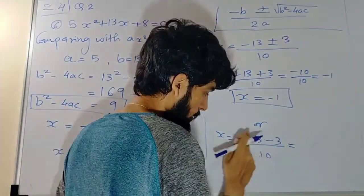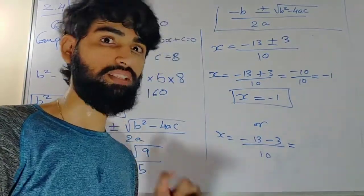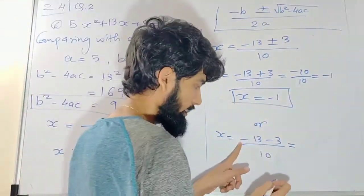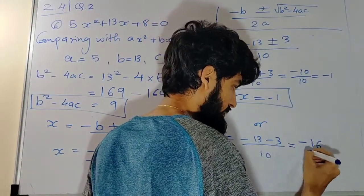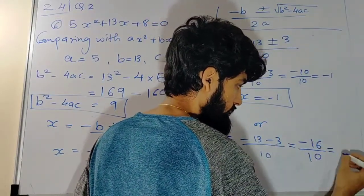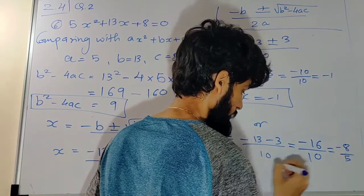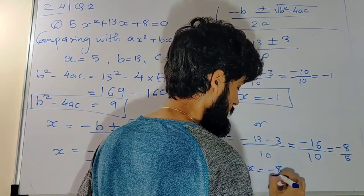But here if we see, minus minus becomes plus, sign of greater number. Greater number is 13. So I will do plus, I mean 16 divided by 10. Answer is minus 8 by 5. So x is equal to minus 8 by 5.